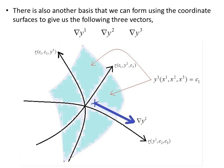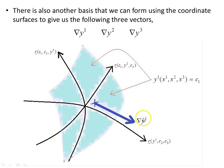There's also another basis we can form using the coordinate surfaces. That's these vectors here — the del (nabla) operator applied to y1, y2, y3. This vector for the coordinate surface shown is del y1. There are three of these for each coordinate surface. So there are three basis vectors formed by each of these surface normal vectors.